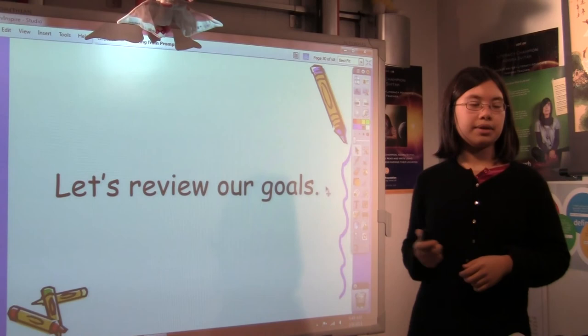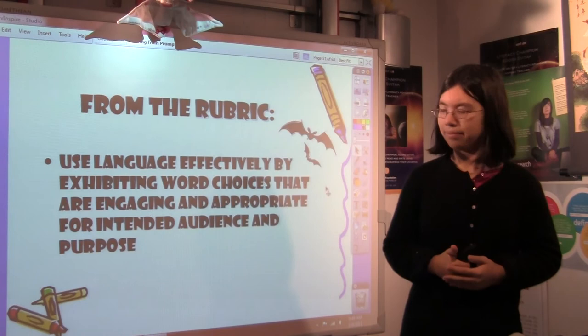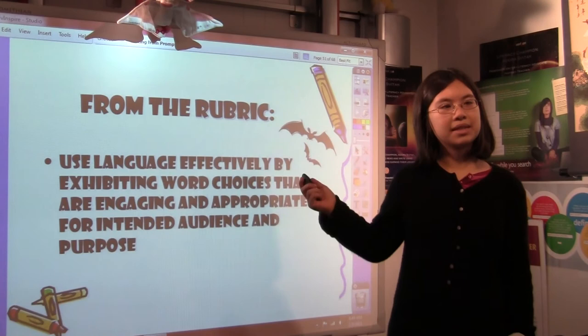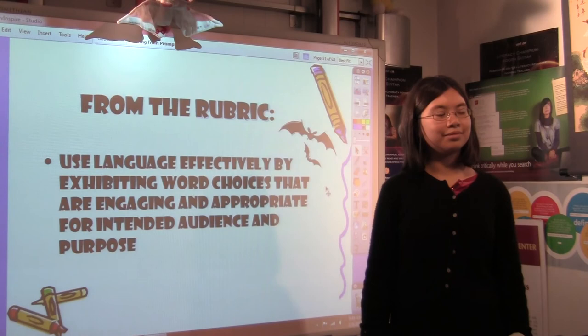So let's quickly review our goals. We want to use language effectively by exhibiting word choices that are engaging and appropriate for intended audience and purpose. That's sort of a pretty big, that's a lot of big words but what are they essentially saying when they say use language effectively by exhibiting word choices that are engaging? What do they say? What are they asking for on that rubric? When they say all those big words what are they really asking you to do, Amy?